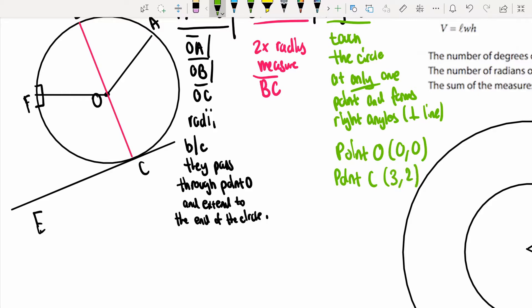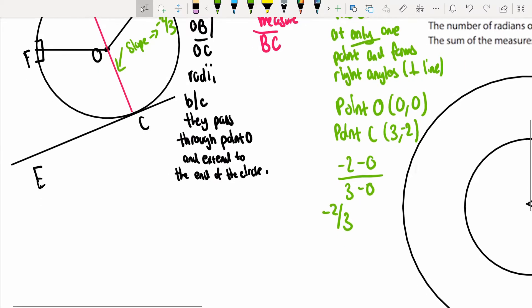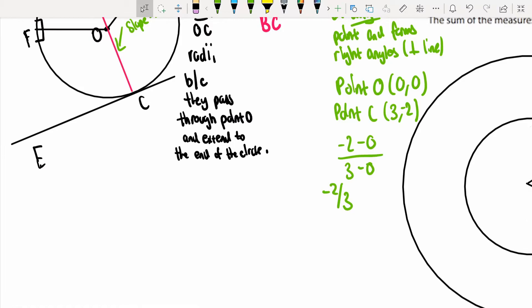In this case, the slope between point O to point C is going to be the difference in the Y's over the difference in the X's. So, -2 minus 0 over 3 minus 0, that'd be -2/3. The slope of the tangent line is the negative reciprocal of the slope from the center to the point. So we negate this, that's going to be 2/3. And the reciprocal means we flip it over. So 3/2 is going to be the slope of the tangent line. Easy.